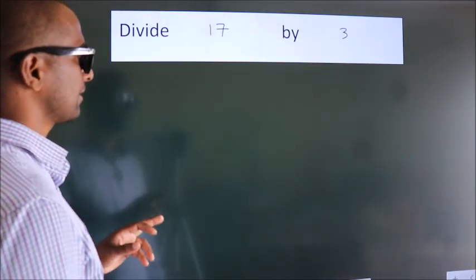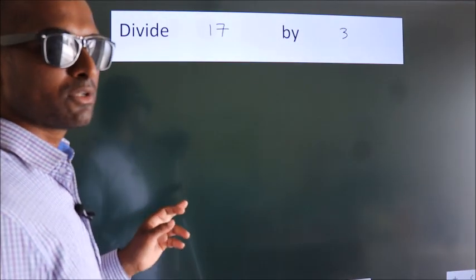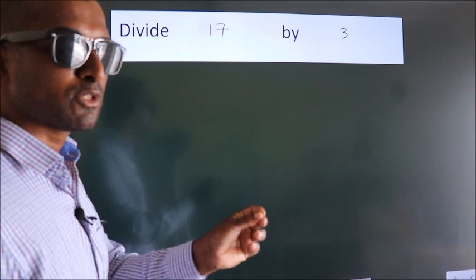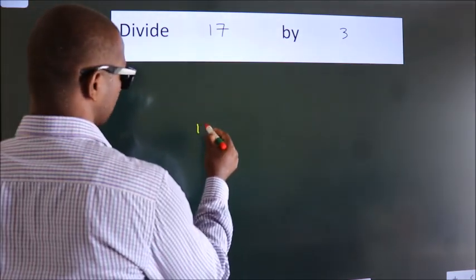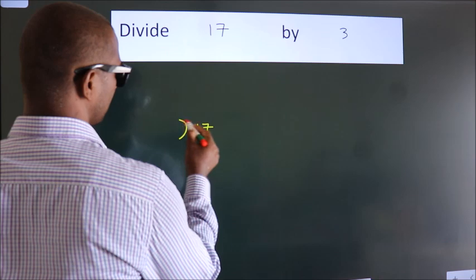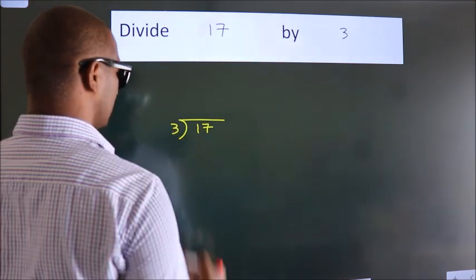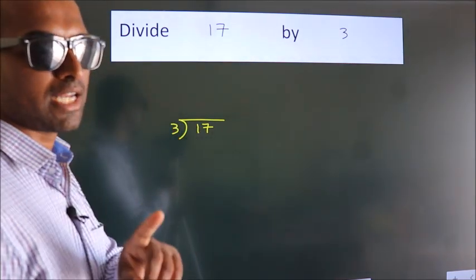Divide 17 by 3. To do this division, we should frame it in this way. 17 here, 3 here. This is your step 1.